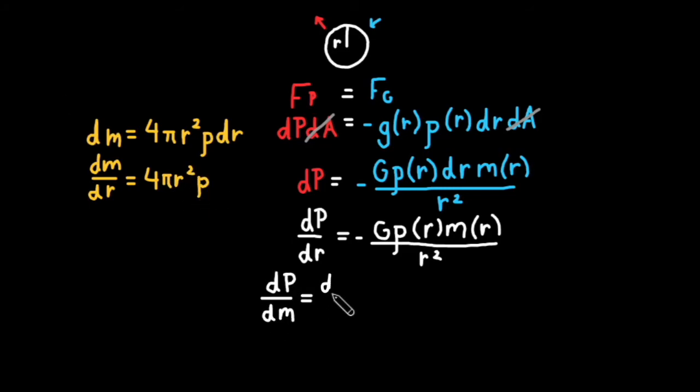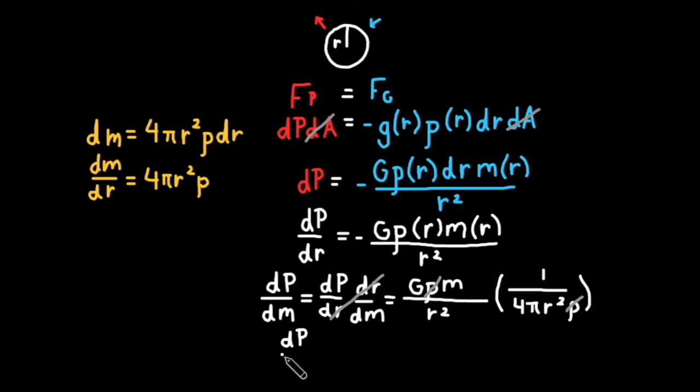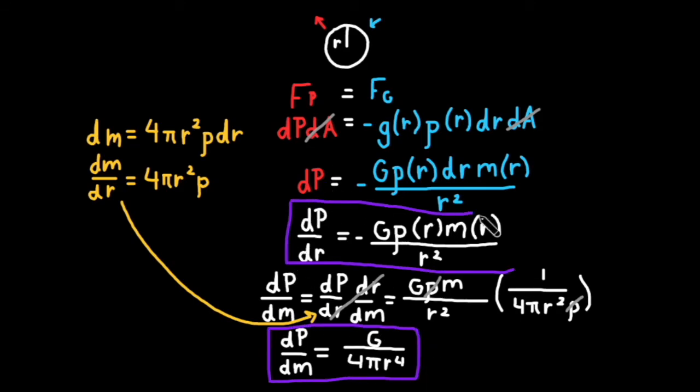By substituting in the inverse of this, dr/dm, we can solve for dP/dm. We cross out like terms to simplify and find dP/dm equal to negative g over 4 pi r to the fourth power. This is another useful form of hydrostatic equilibrium.